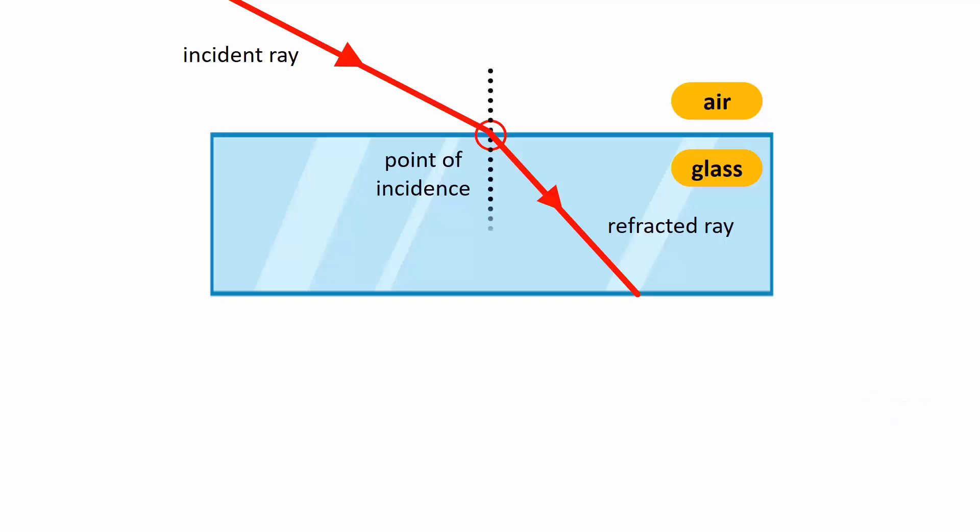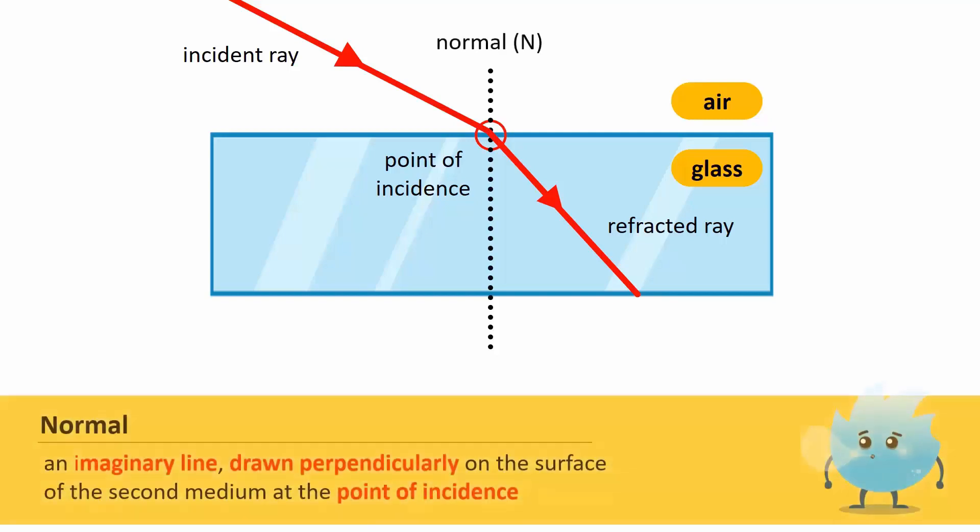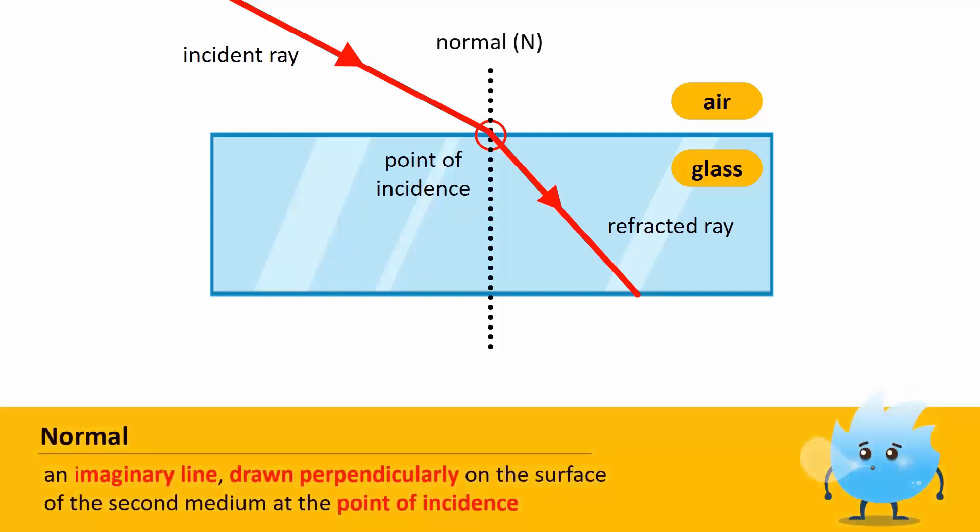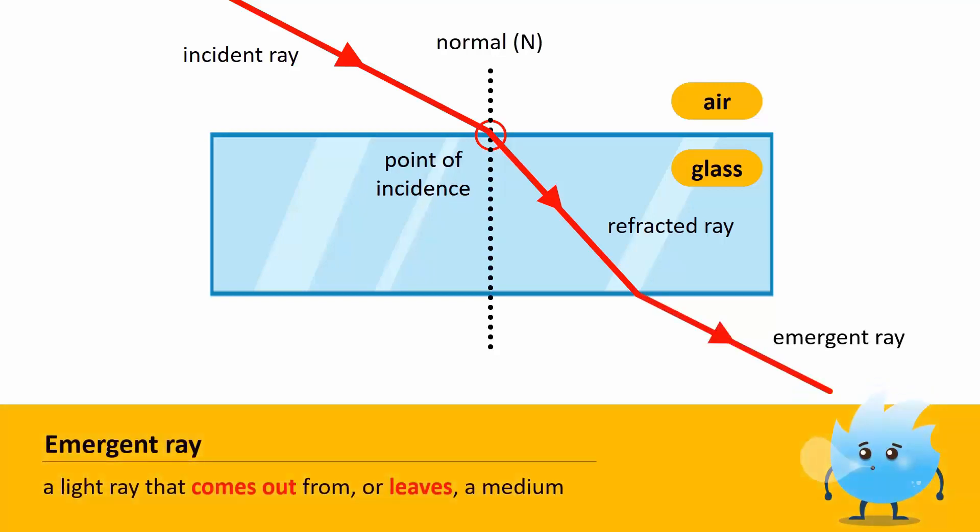If we draw an imaginary perpendicular line on the surface, we call this a normal line, or just normal. A light ray that comes out from or leaves a medium is called an emergent ray.